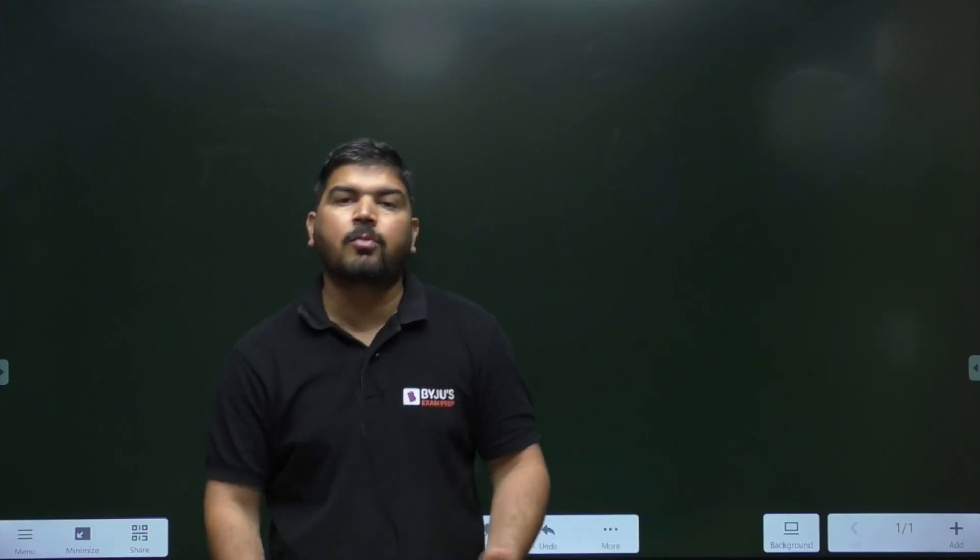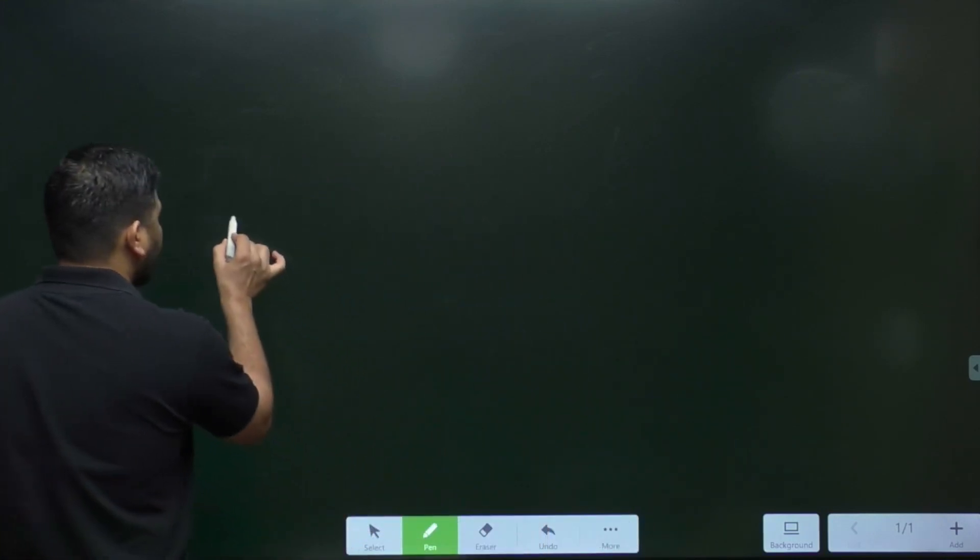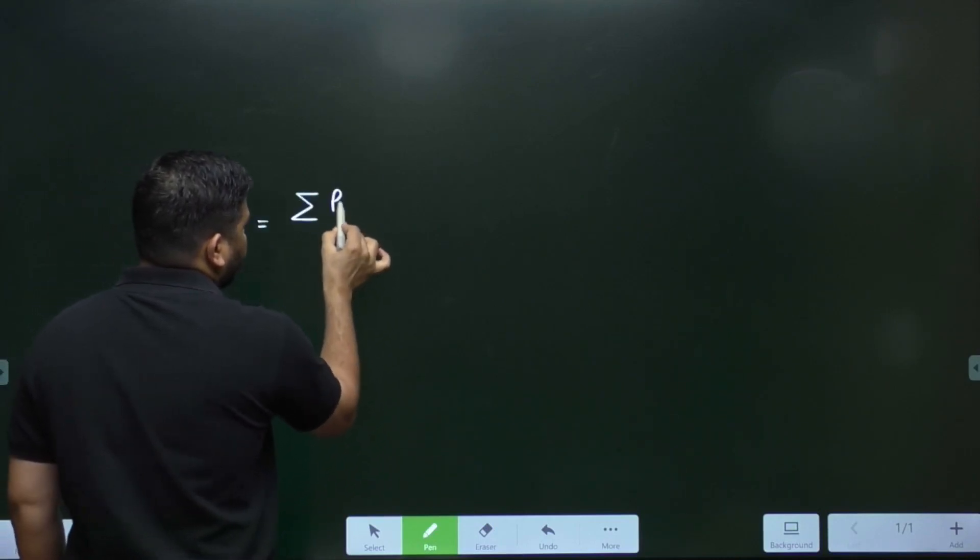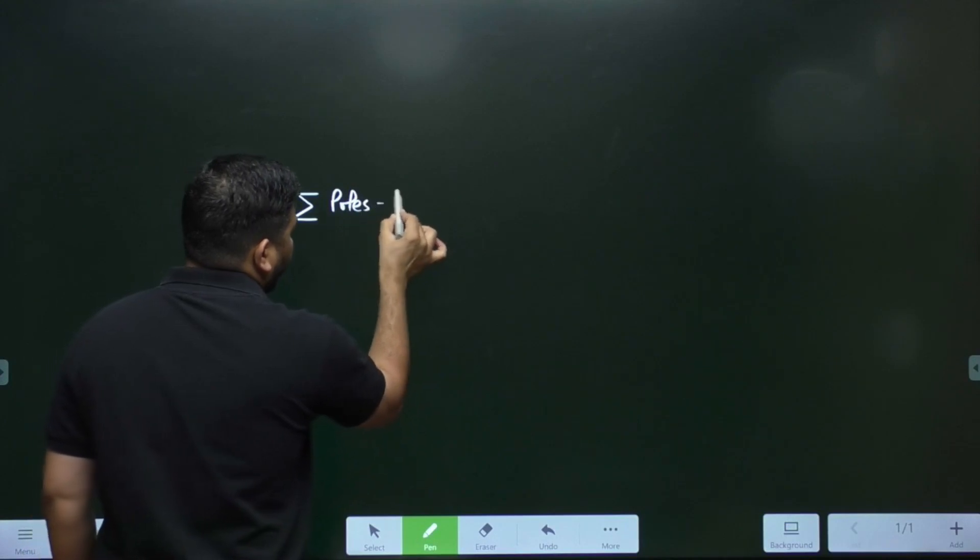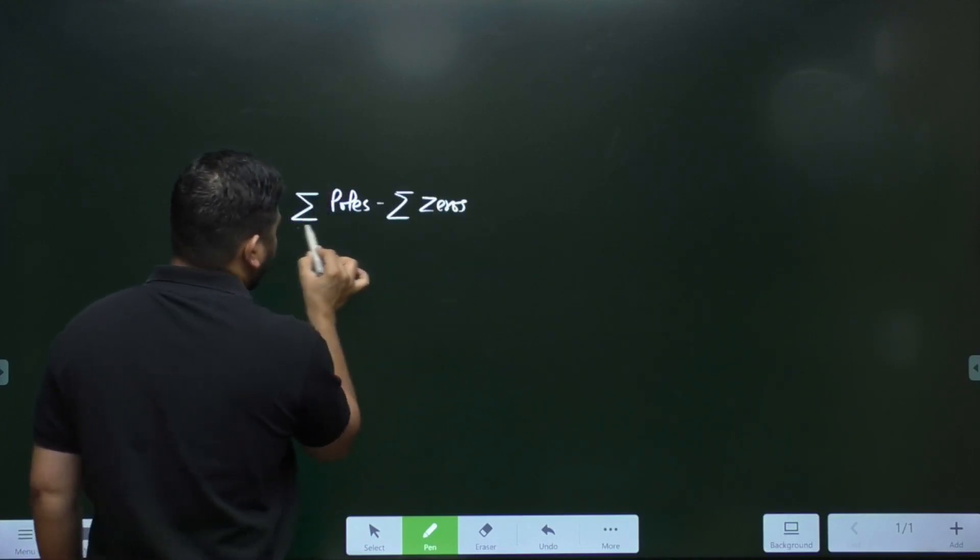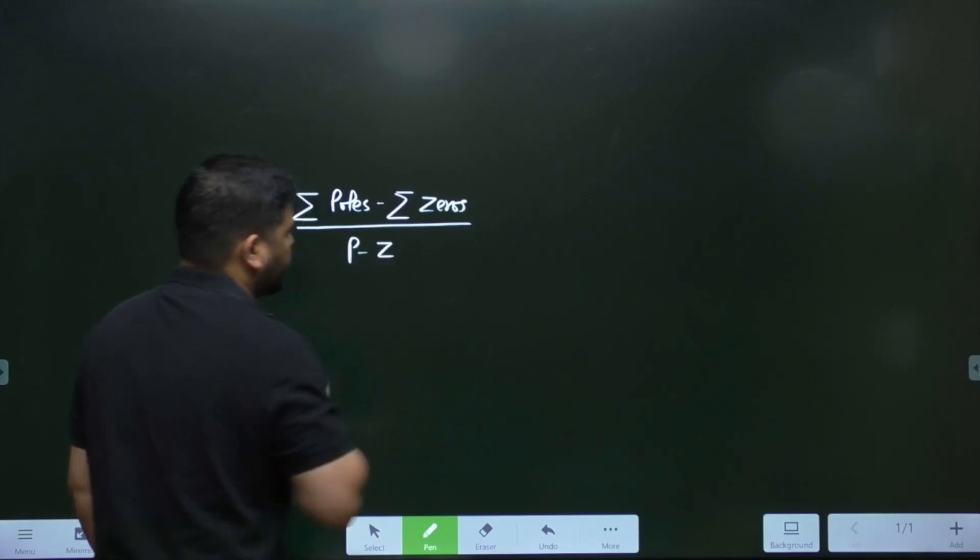Generally, we apply the formula for centroid point. What is that formula? The formula is sum of poles minus sum of zeros divided by number of poles minus number of zeros.